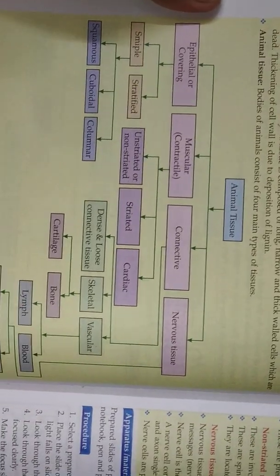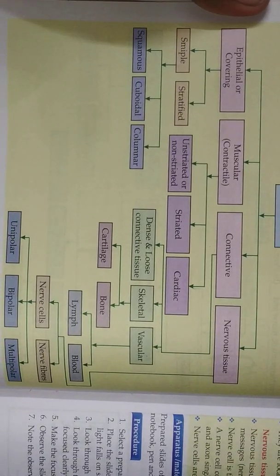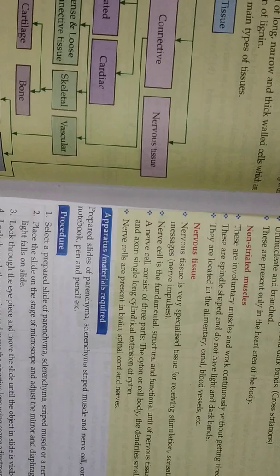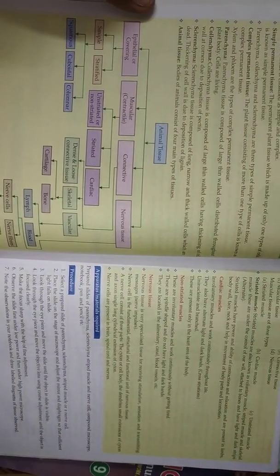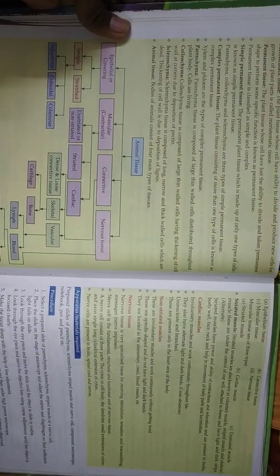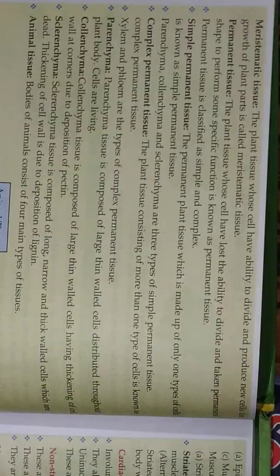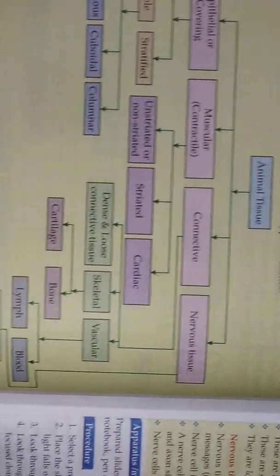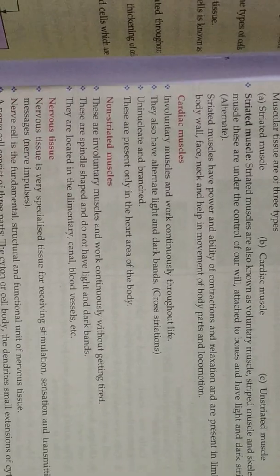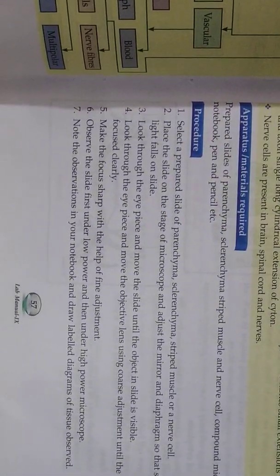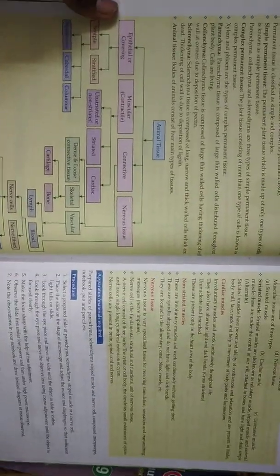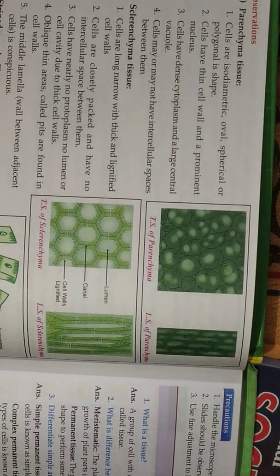Here is animal tissues. And then next page. And then next page on the observations: parenchyma tissue, sclerenchyma, striped muscle, and then nerve cell and neuron. You see, and sclerenchyma tissue, parenchyma.